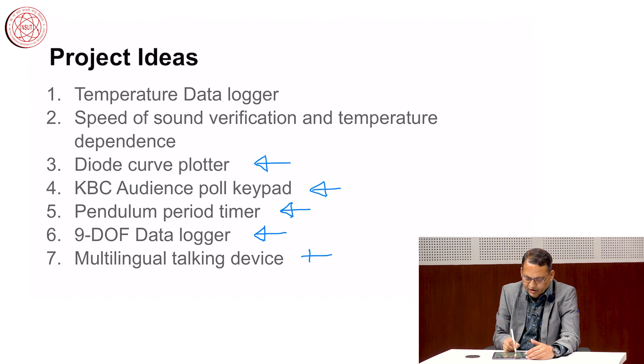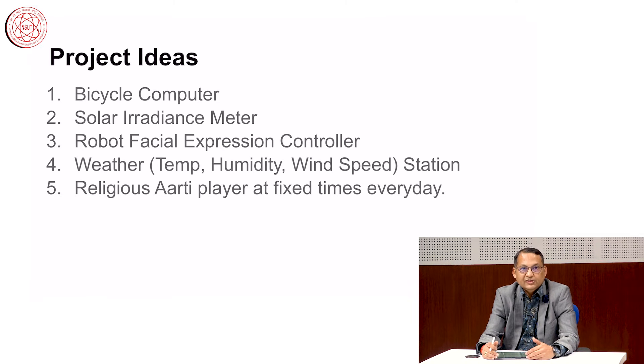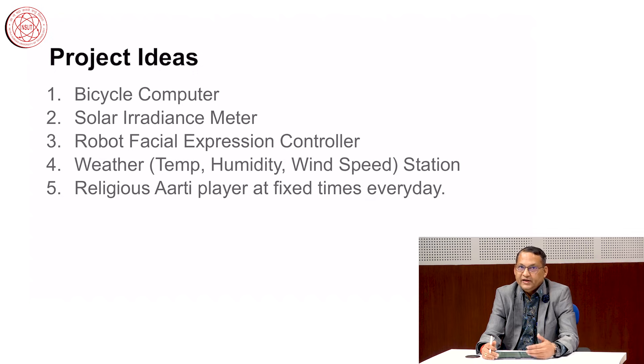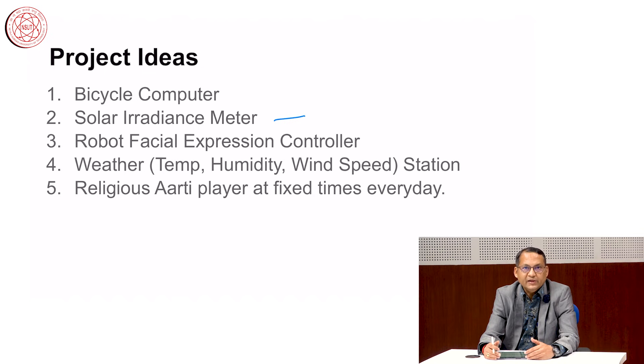You can build a multilingual talking device — similar to the talking thermometer shown in my first lecture, but with an option to speak in different languages such as Hindi, Tamil, Telugu and so on. You can build a bicycle computer that tells you the distance travelled, speed, acceleration and similar metrics, attached to the handlebar with a sensor on the wheel. You can create a solar irradiance meter to record the amount of sunlight falling at a given place.